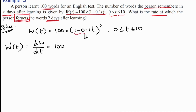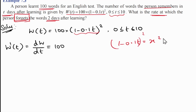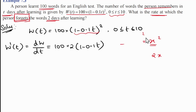Since we have an algebraic function (1 - 0.1t)², we apply the chain rule. Differentiating (1 - 0.1t)² gives 2 into (1 - 0.1t). Just like differentiating x² gives 2x, that is why differentiating (1 - 0.1t)² gives 2(1 - 0.1t).